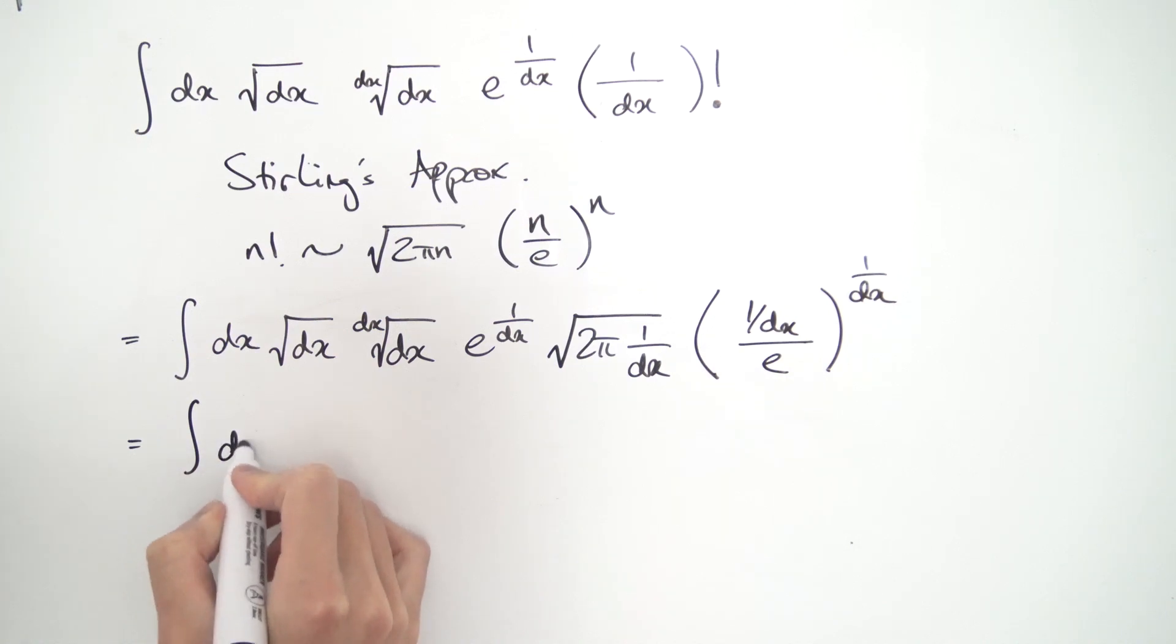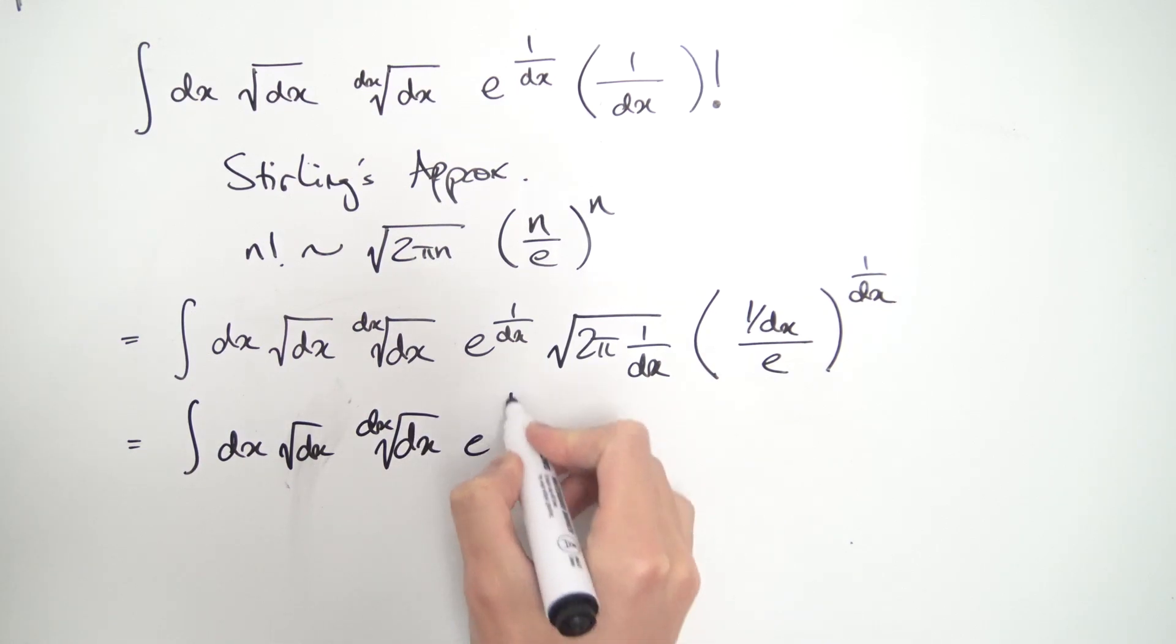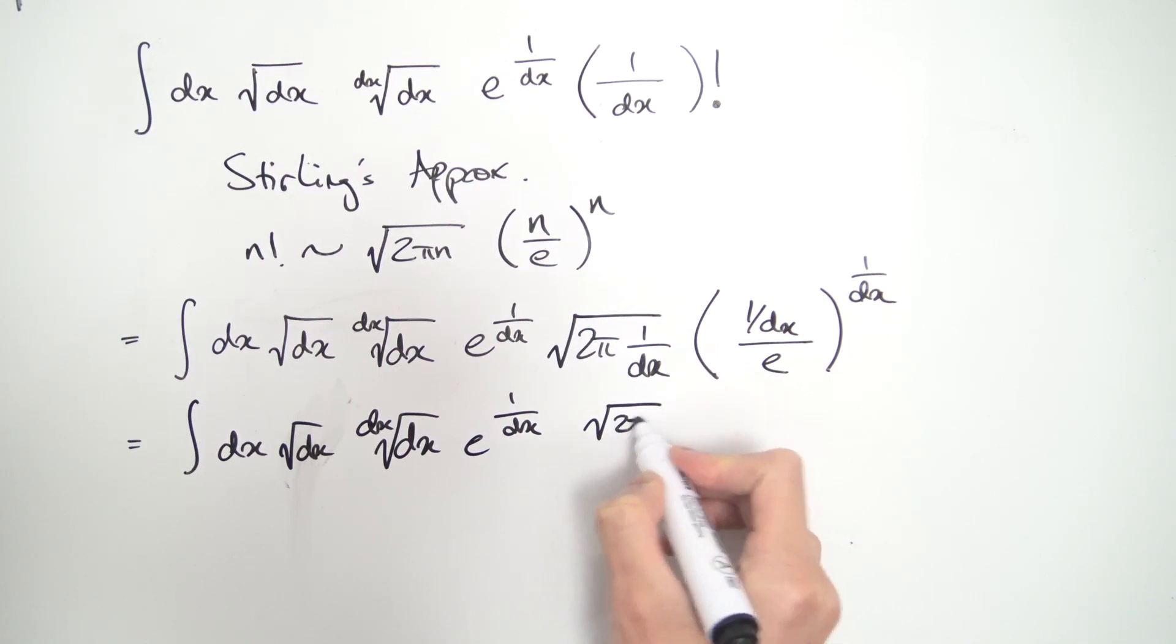So now we have the integral of dx, square root of dx, dx root of dx, and then e to the 1 over dx. And notice we can split this up a little bit. We can split this up into its square root of 2 pi divided by the square root of dx. That's nice because notice, square root of dx is going to cancel with this guy over here.